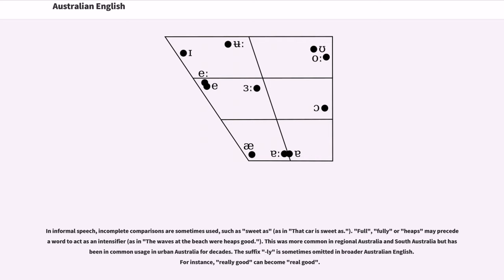In informal speech, incomplete comparisons are sometimes used, such as sweet as, as in that car is sweet as. Full, fully or heaps may precede a word to act as an intensifier, as in the waves at the beach were heaps good. This was more common in regional Australia and South Australia but has been in common usage in urban Australia for decades. The suffix -ly is sometimes omitted in broader Australian English. For instance, really good can become real good.